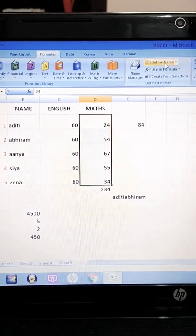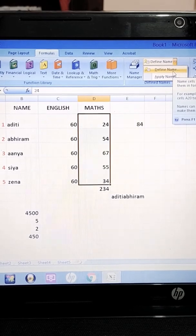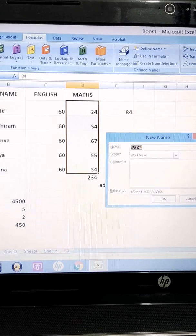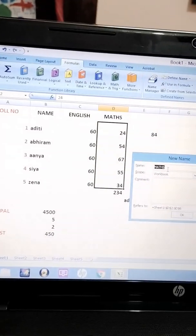Define Name option. Now this dialog box will come. You can give any name. By default they have given the name of this column Maths. You can give any name. I am writing Maths one. You can write any comment also if you want, that is optional.